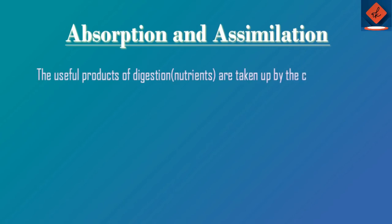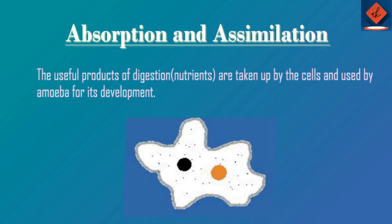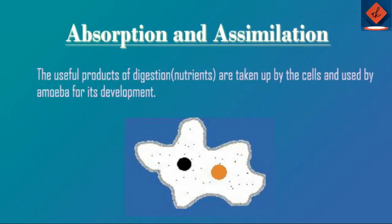The useful products of digestion are nutrients. These nutrients are taken up by the cell and absorbed. They are then used by the amoeba for its growth and development — this is called assimilation.